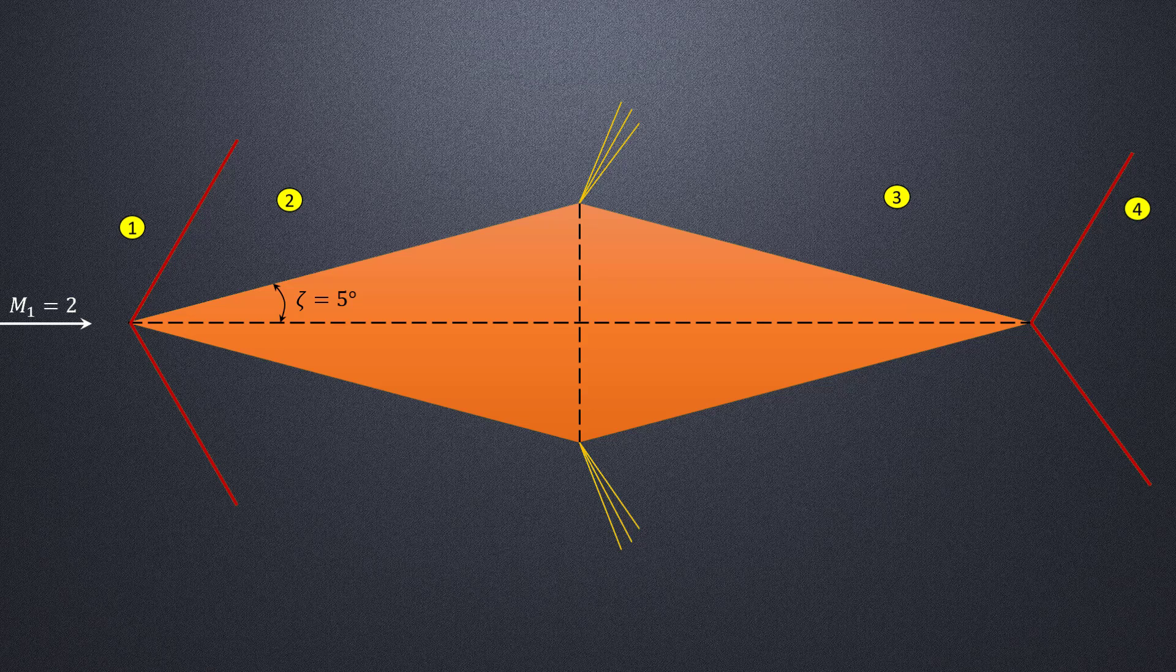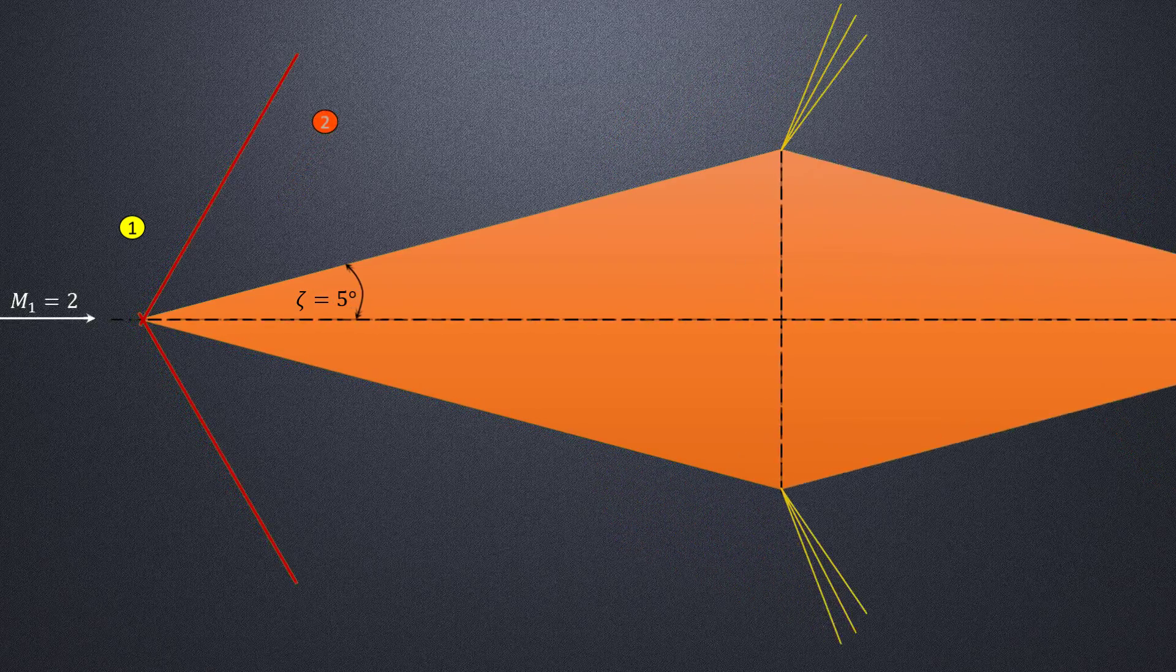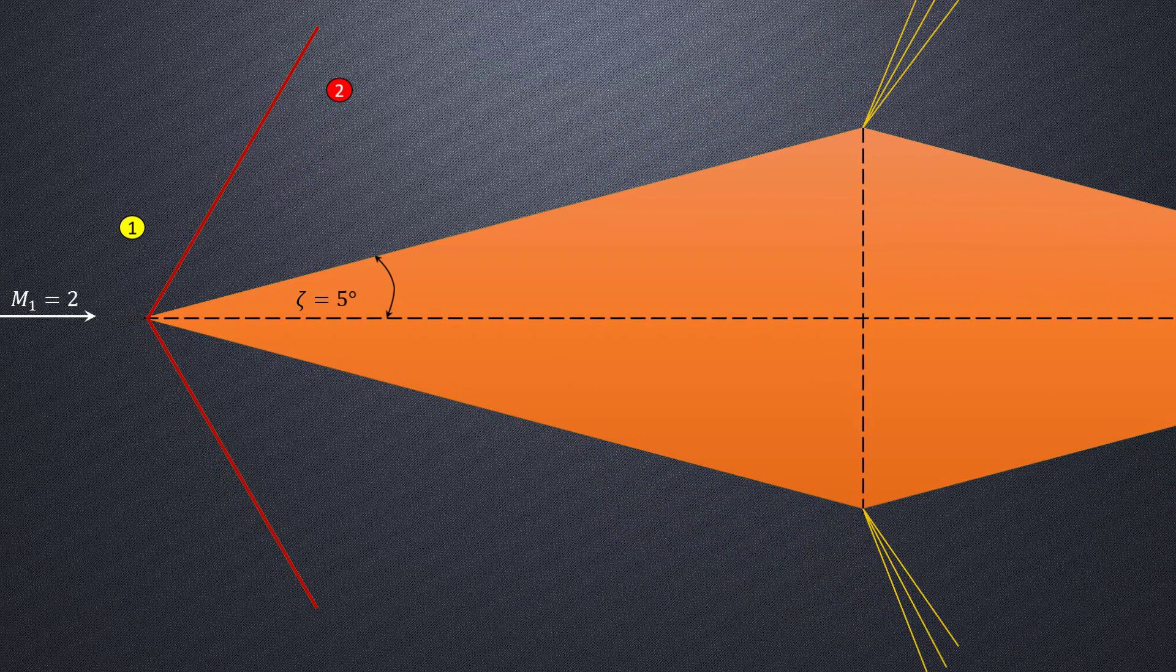Region 2 is behind the oblique shock wave. Since we know Mach 1 is equal to 2 and theta is equal to 5, using the theta-beta Mach number curve, we can estimate the weak shock angle beta to be 0.599 radians, or approximately 34.3 degrees.